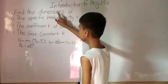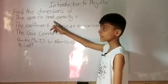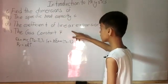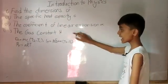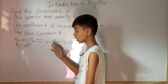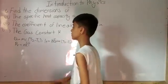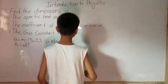Question number six is find the dimensions of specific heat capacity C, coefficient of linear expansion alpha, and the gas constant R. Some equations involving those quantities have been given to us. So now let us try to solve it.